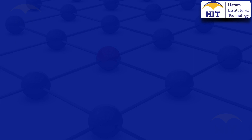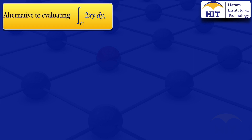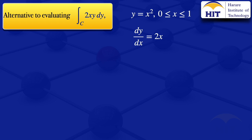Now for the alternative method of evaluating the integral of 2xy with respect to y along the curve C. Given y equals x squared with x from 0 to 1, we differentiate y with respect to x to get dy over dx equals 2x, so dy equals 2x dx. Substituting this into the integral of 2xy with respect to y along curve C gives a direct approach.